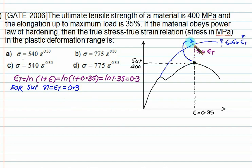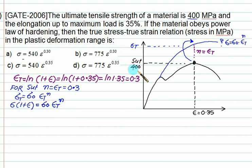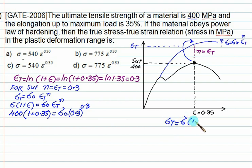First, calculate the true stress corresponding to SUT = 400 MPa using: σₜ = σ × (1 + epsilon) = 400 × (1 + 0.35). Once this true stress is known, use the flow curve equation: σₜ = σ₀ × εₜ^n, substituting epsilon-t = 0.3 and n = 0.3. Solving for sigma-0 gives approximately 775. So the equation is σ = 775 · εₜ^0.3.